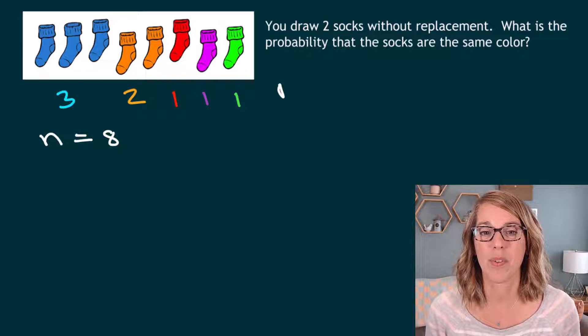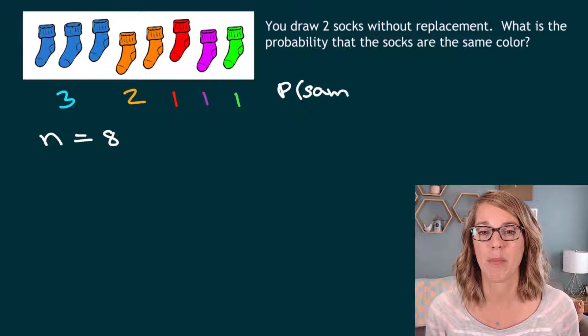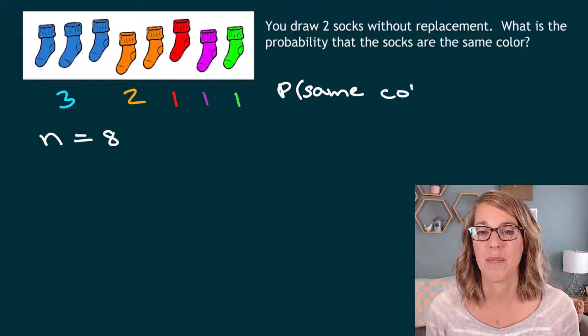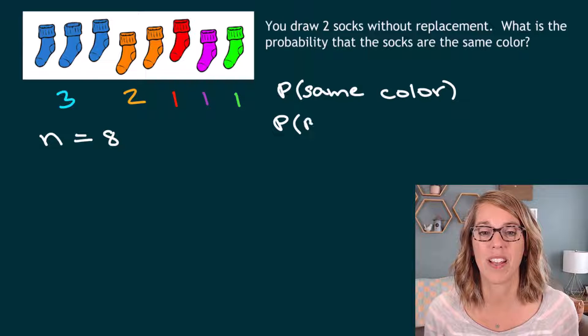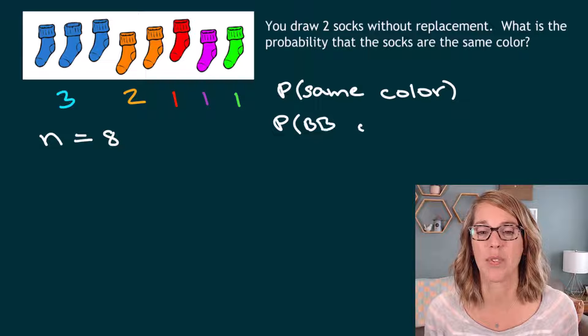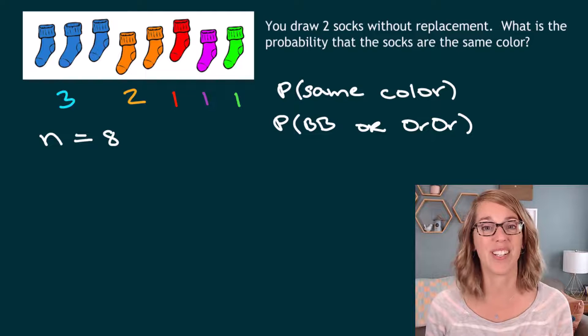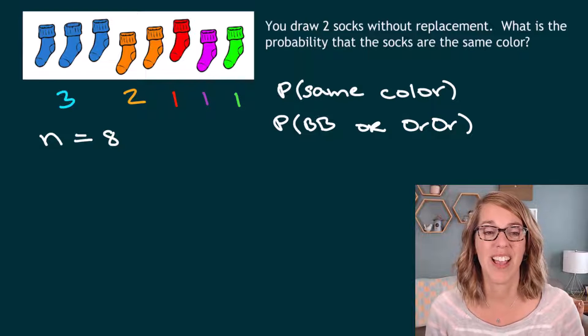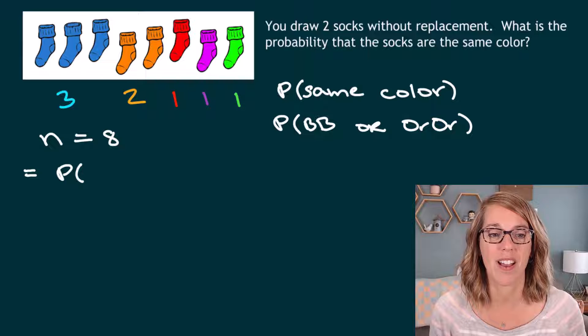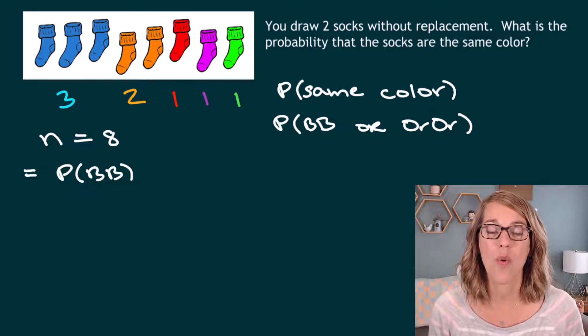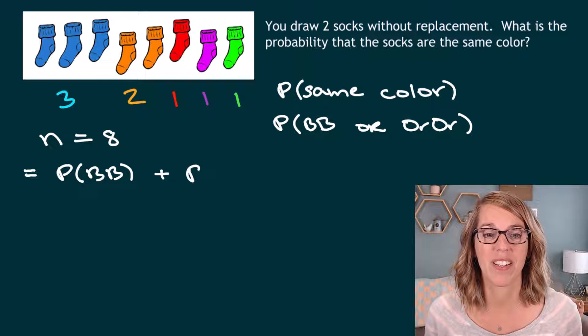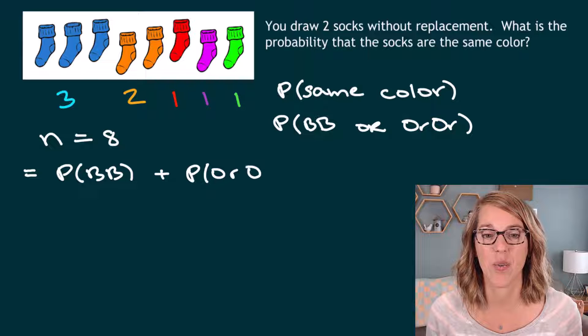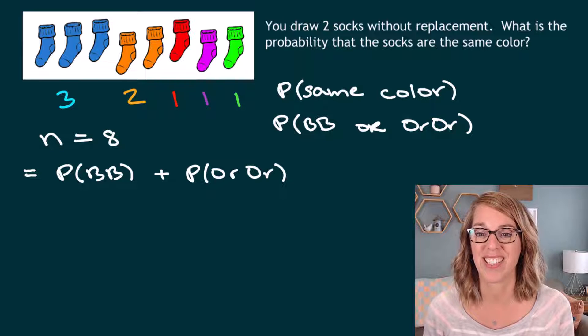As I'm putting this together, I want the probability of the same color. So I'll do probability same color, but there are only two colors that will work. So this is going to be the probability of getting a blue and a blue, or the probability of getting an orange and an orange. Those are the only two cases that we've got. As I put this together, this is going to be the probability of blue and blue. Or means we're going to add those cases probabilities together. So the probability of orange and orange.